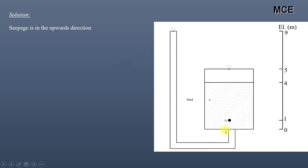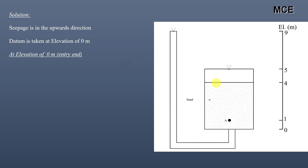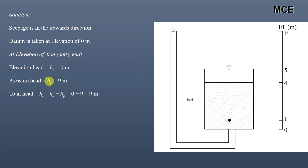Now for the next soil sample — Case B. Seepage will be in the upward direction because the total head at the lower elevation of 0 meters is greater than at the elevation of 4 meters. Taking datum at 0 meters, at the entry end the elevation head is 0 meters, pressure head is 9 meters (the level of free water above this point), so total head is 0 plus 9, which equals 9 meters.